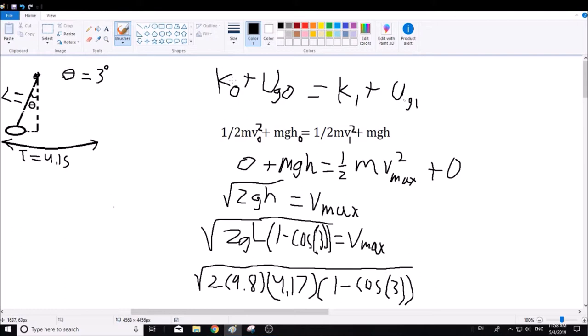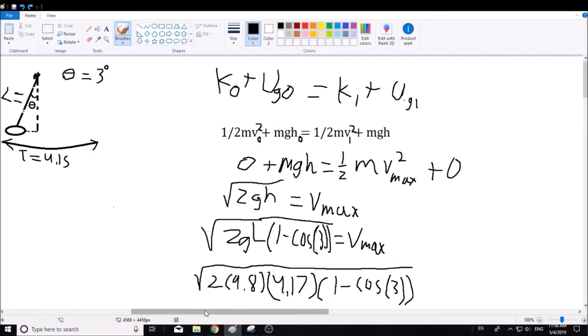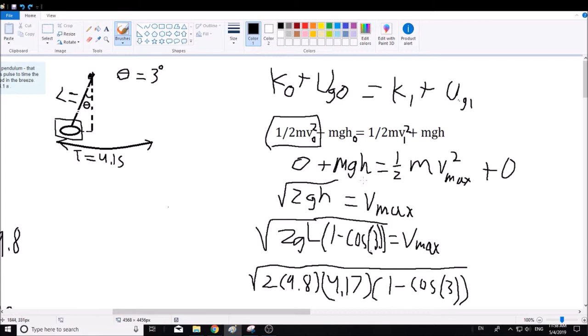We can use these energy equations to find out the maximum velocity. Since in the beginning there will be no kinetic energy when it's resting at its maximum point, we'll be using the gravitational potential energy for the initial.